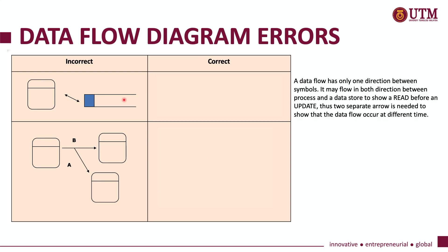Another error is when you have a data flow with two directions. You might want to represent that data is going into a data store and also going back to a process. However, you should represent it as two separate data flows, because the first data flow may represent data being read into the system, while the second represents a different type of data being returned to the process.